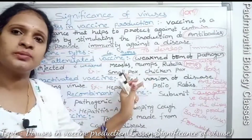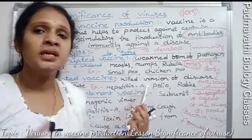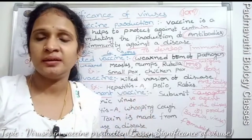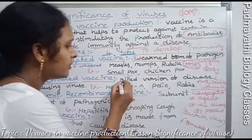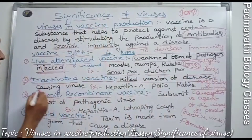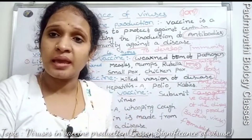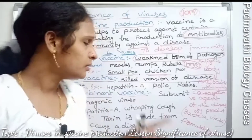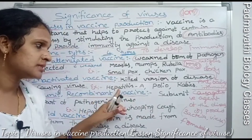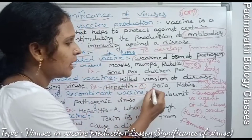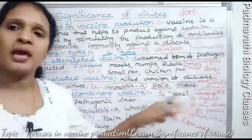The second type is the inactivated vaccine. Inactivated means the pathogen is inactivated — that is, a killed version of disease-causing viruses is used. This type of vaccine is used to protect against diseases like hepatitis A, polio, and rabies.